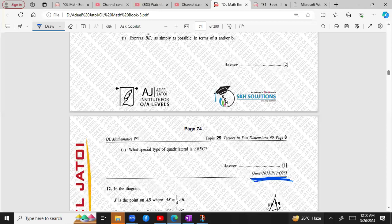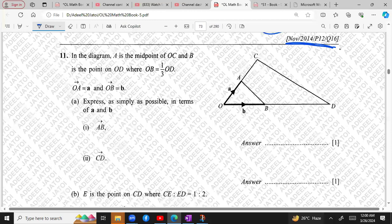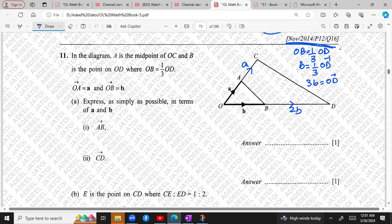So in the diagram, A is the midpoint of OC. So if A is the midpoint, this will also be A, where OC and B is the point on OD such that OB is one third of OD. So if I want to find out the complete OD, this should be 3B. So BD will become 2B because OB is 1 upon 3 OD. So OB is B, which means 1 upon 3 OD. So this will be 3B OD. So obviously, if this entire thing is 3B, we can subtract B and get 2B.